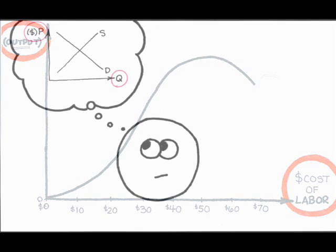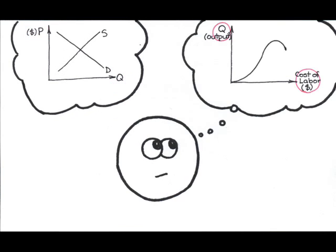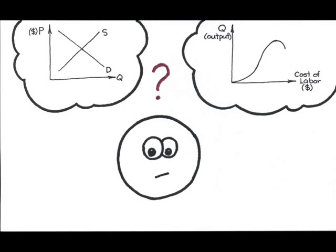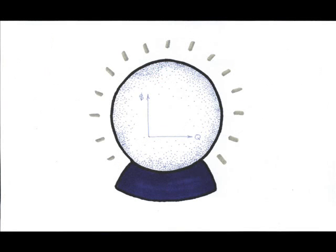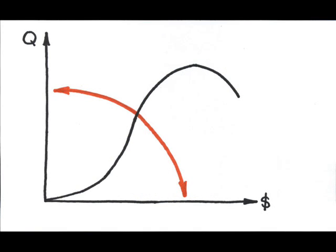With the market diagram, price, which is in dollars, is on the vertical axis, and quantity is on the horizontal, whereas here we have quantity of output on the vertical axis and cost in dollars on the horizontal. We're going to want the cost diagram to be consistent with the market diagram. It's pretty simple — we just need to flip the axes in the cost diagram so that they match.